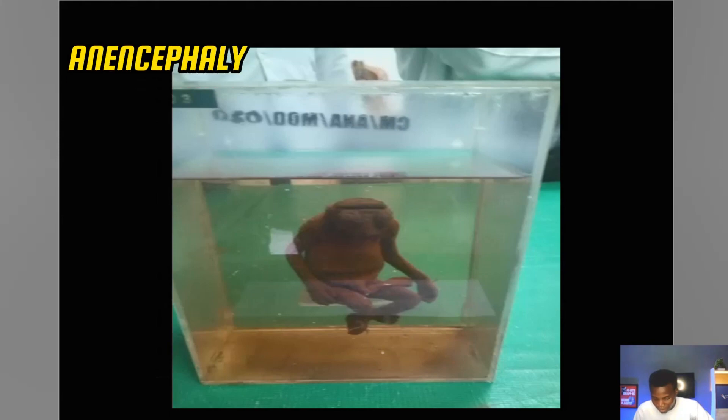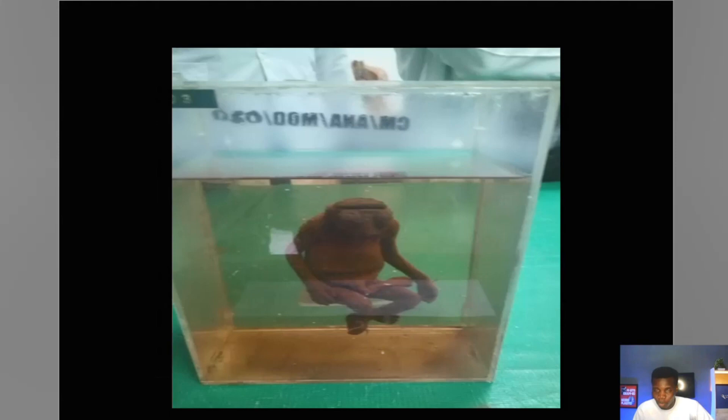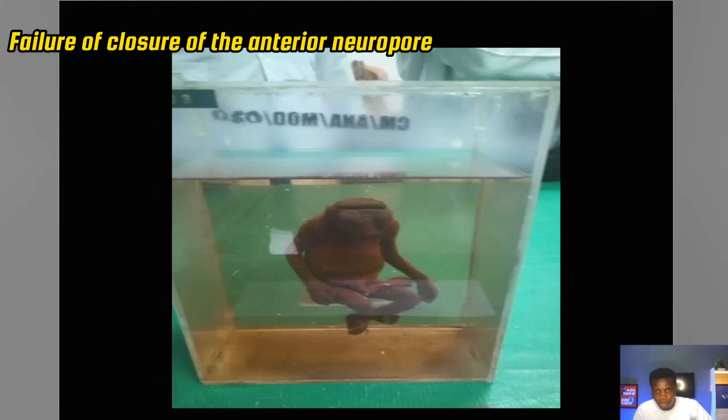Victims of anencephaly don't usually survive. It arises when the brain's anterior neural pole doesn't close. The question could be: what is the condition? Anencephaly. Or: what is the embryological reason? Failure of the anterior neural pole to close on the expected day 25. If you want your full mark, tell them it arises due to failure of the anterior neural pole to close on day 25.